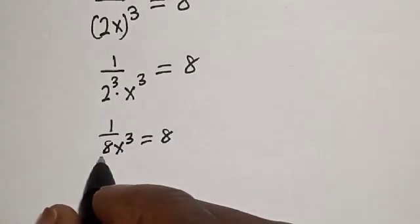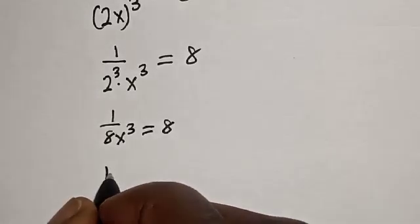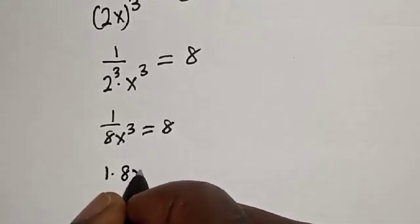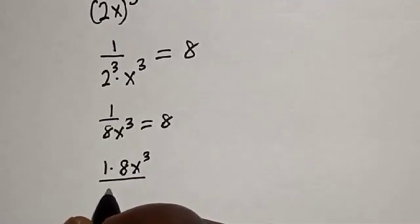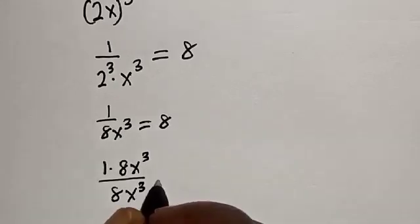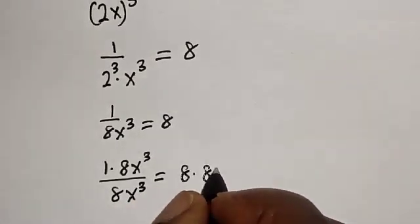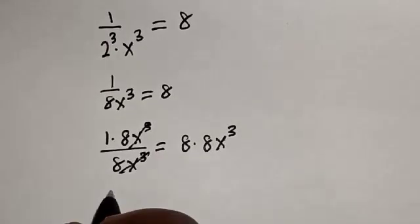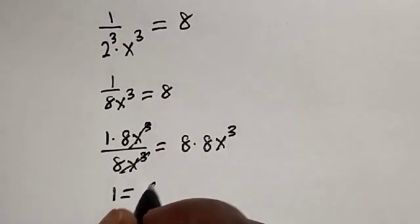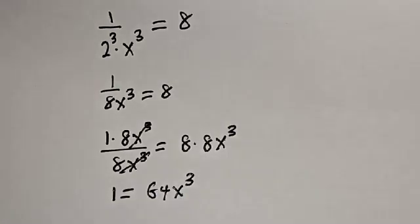Then let's cross multiply, or multiply both sides by 8x raised to the power of 3. This one will cancel this. We have 1 is equal to 64x raised to the power of 3.